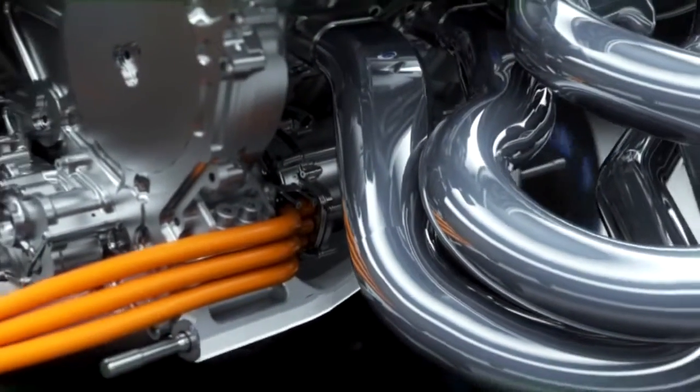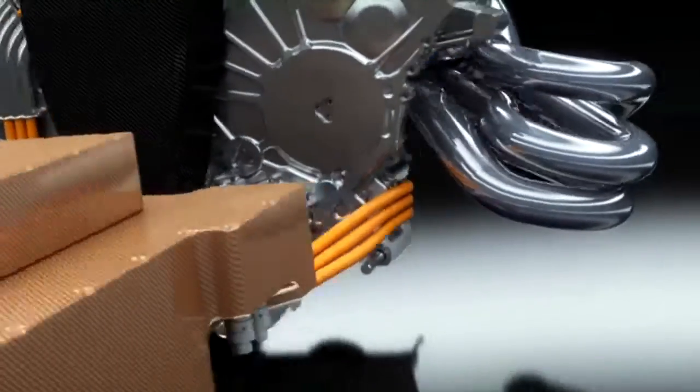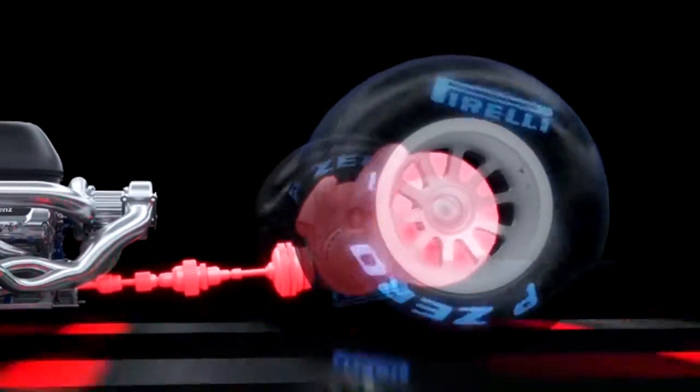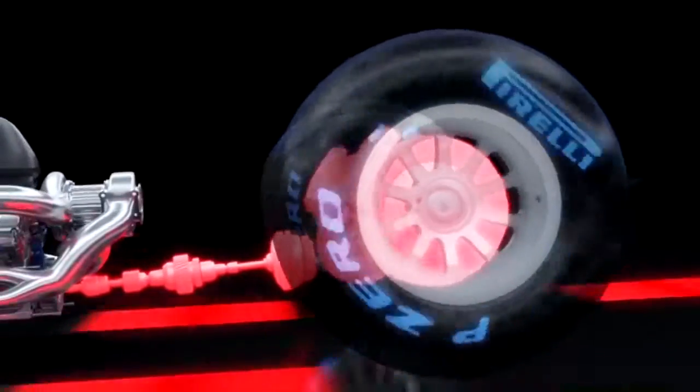Connected to the braking system and acting as a generator, the MGU-K can feed so much energy into the battery every lap that you could talk for 370 hours on your BlackBerry smartphone.